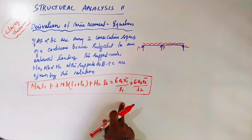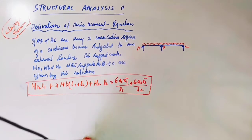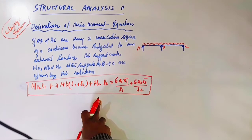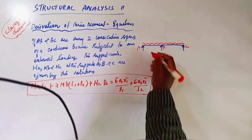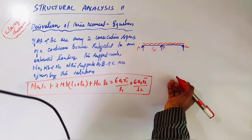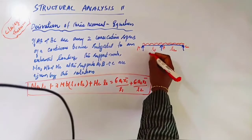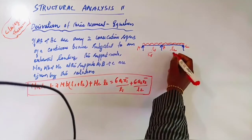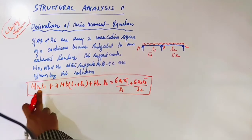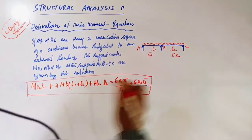In this relation: MA, MB, MC are the moments at supports A, B, C. L1 is the span of AB and L2 is the span of BC. I1 is the moment of inertia of span AB and I2 is the moment of inertia of span BC.